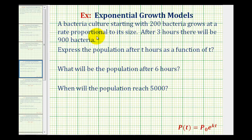A bacteria culture starting with 200 bacteria grows at a rate proportional to its size. After three hours there will be 900 bacteria. This is an example of an exponential growth model.